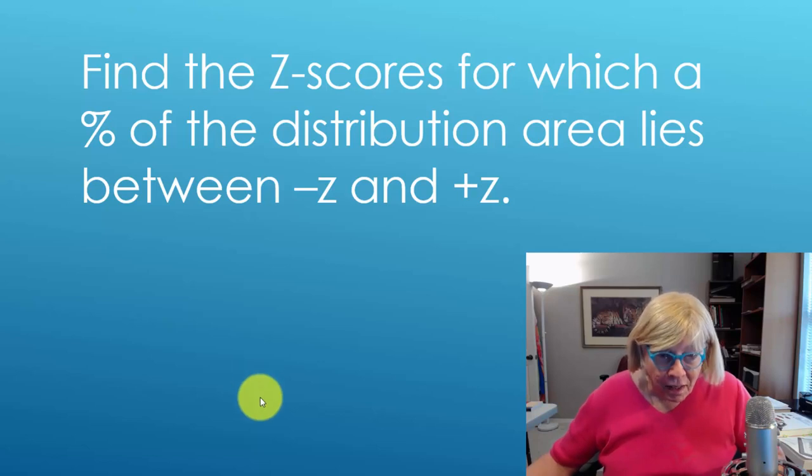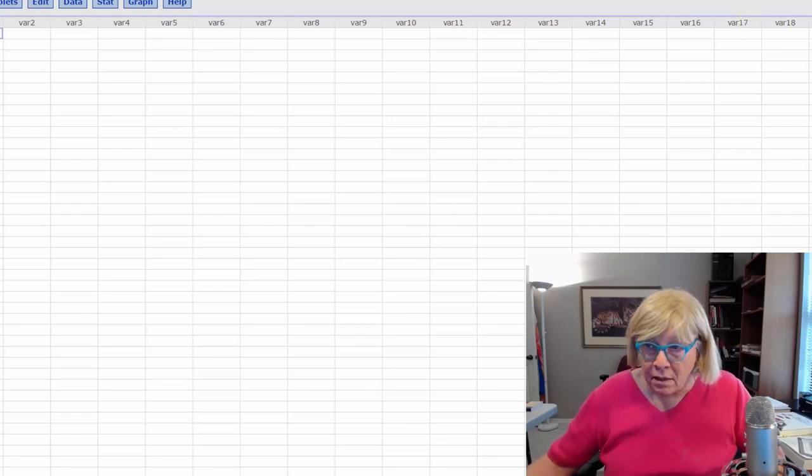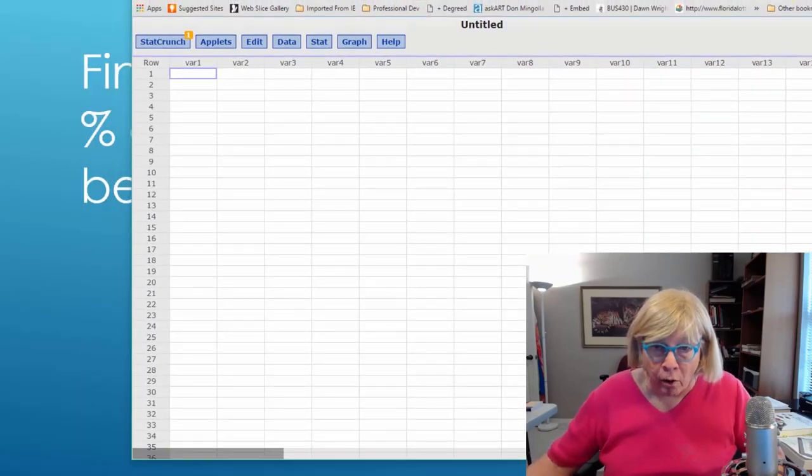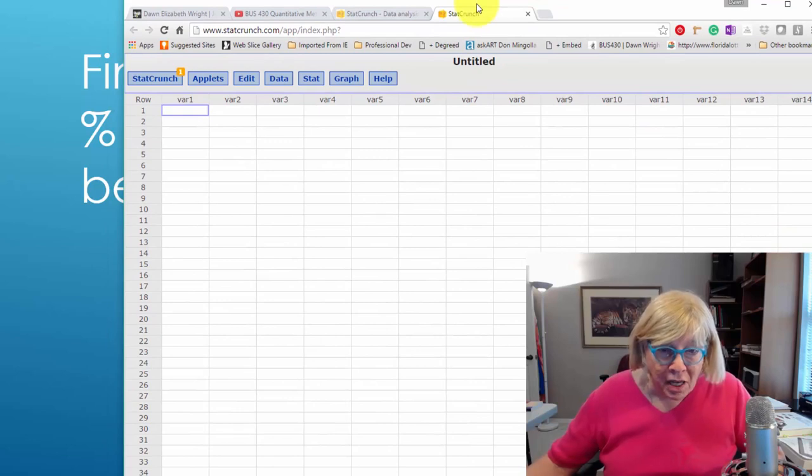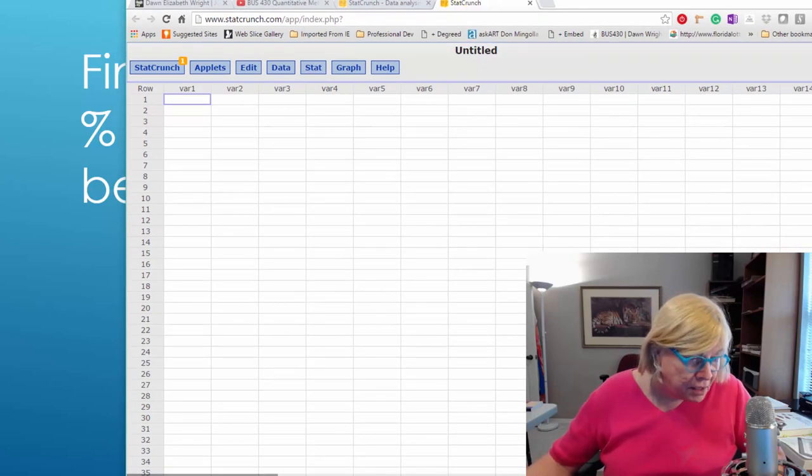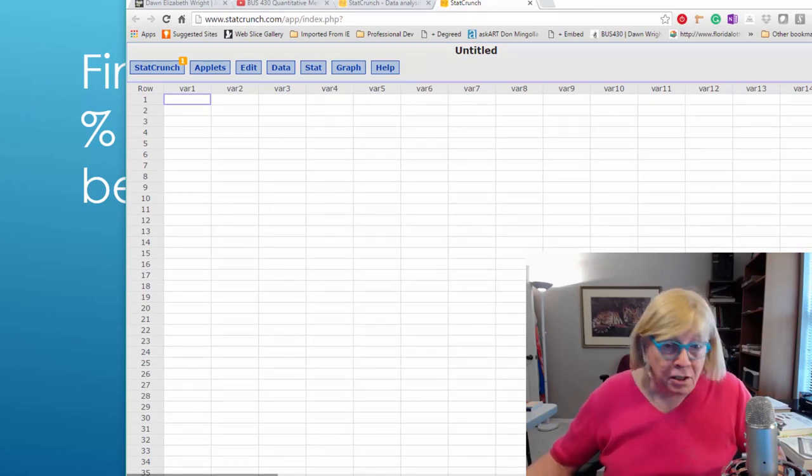Let me just show you how we do this. I'm going to bring up StatCrunch. Let's say that the answer is, as Brandon suggested, that the area between is 86 percent. So how do we find that?